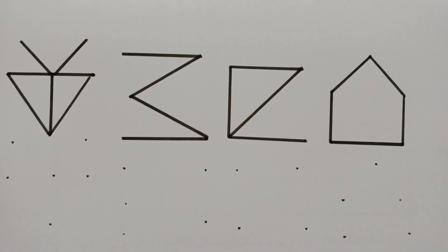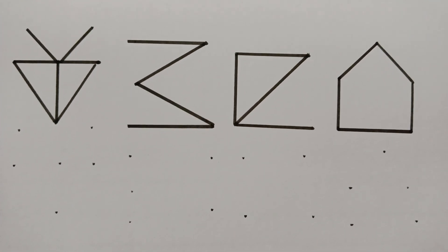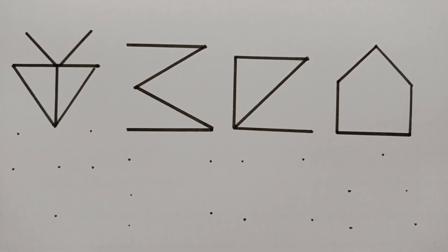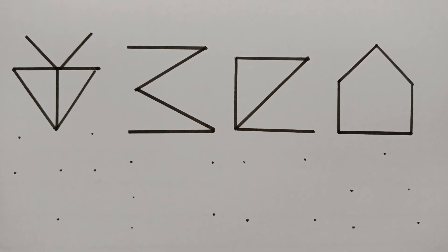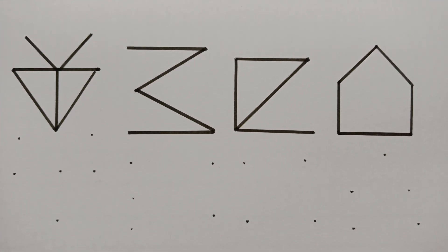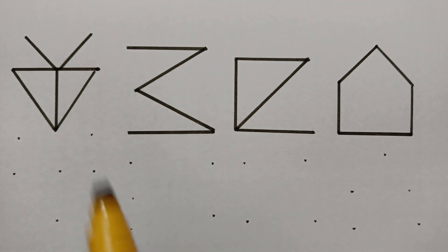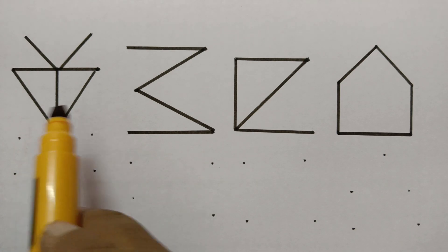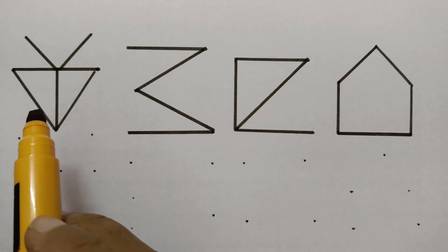So how to color these graphs? We have to color them using one simple technique: no two adjacent edges should have the same color. Now let's get started to color this one.